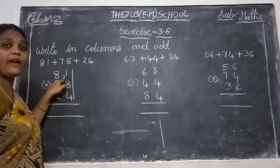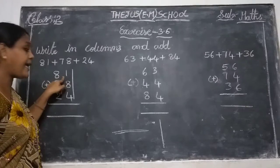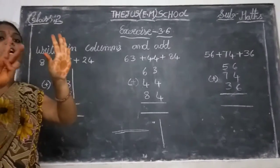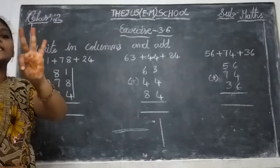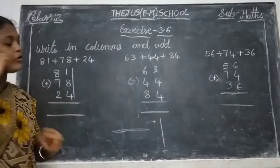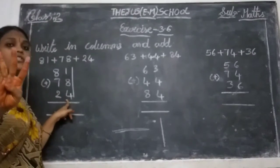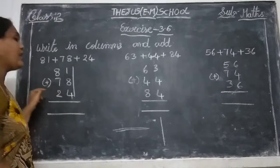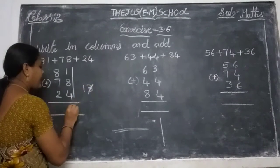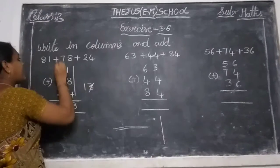The first number is 1. Keep 1 in your mind, take 8 fingers: count 2, 3, 4, 5, 6, 7, 8, 9. Now keep 9 in your mind, take 4 fingers: count 10, 11, 12, 13. Then continue to 15, 16. Write 16 here.